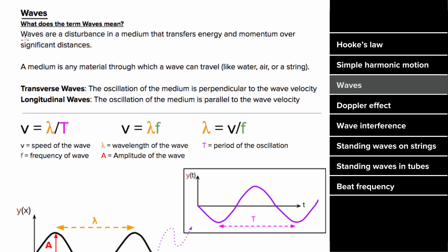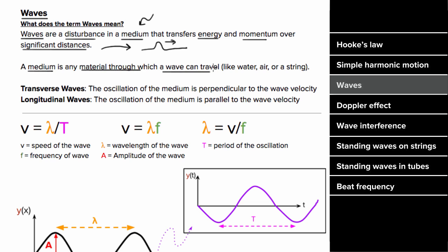What are waves? Waves are disturbances that travel through a medium and transfer energy and momentum over significant distances without transmitting any mass itself over those distances. Medium is a fancy word for the material through which the wave can travel. You can classify a wave by the medium it's in, or by the type of disturbance created.